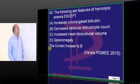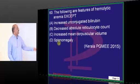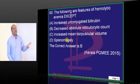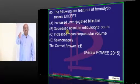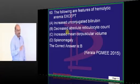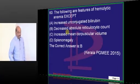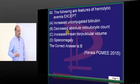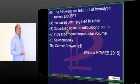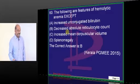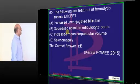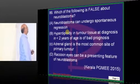In hemolytic anemia, there is no other anemia where you find brisk reticulocytosis. When RBCs are broken down in peripheral hemolysis, the bone marrow will try to compensate. So brisk reticulocytosis — 7%, 8% — is what you see in hemolytic anemia.